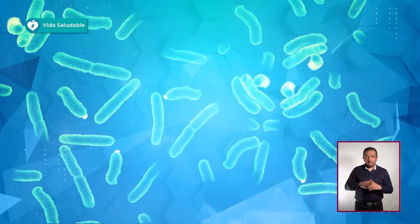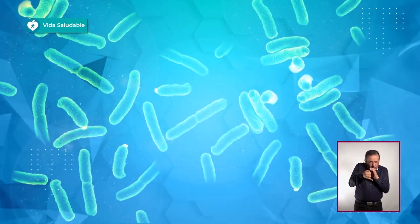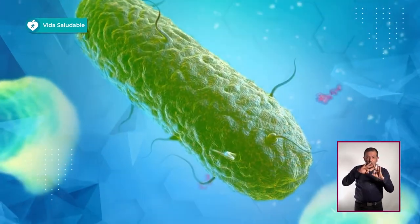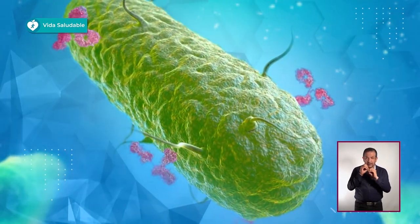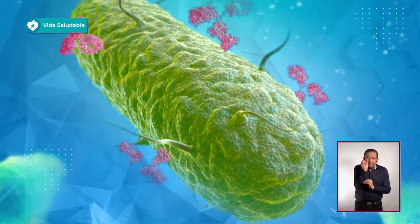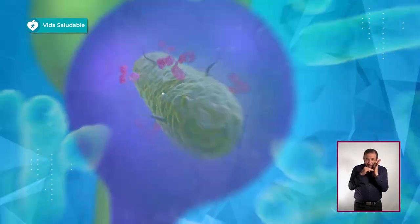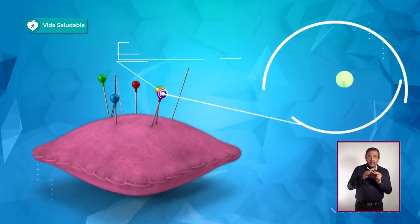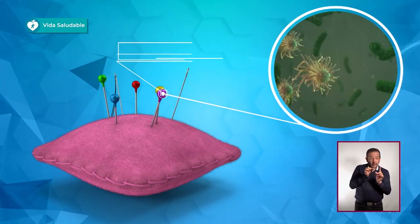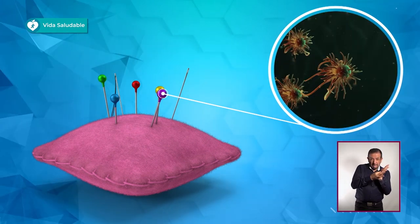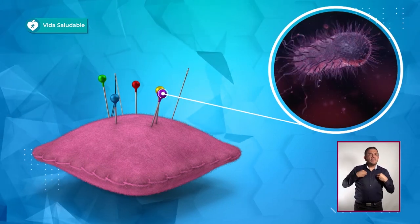Las bacterias son organismos microscópicos unicelulares y sin núcleo. Su forma puede ser la de una varilla, una espiral o pelotitas. Son tan pequeñas que entre 1 y 3 millones de bacterias podrían caber en la cabeza de un alfiler. También son las células más antiguas que existen en el planeta. Las encontramos en casi todas partes y dependiendo de su variedad pueden sobrevivir en condiciones de frío o de calor.